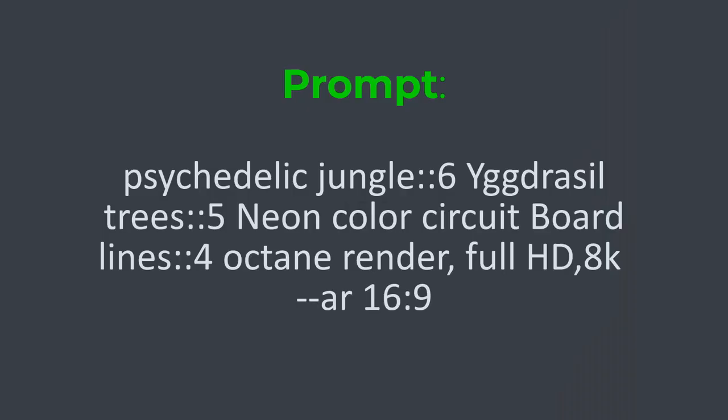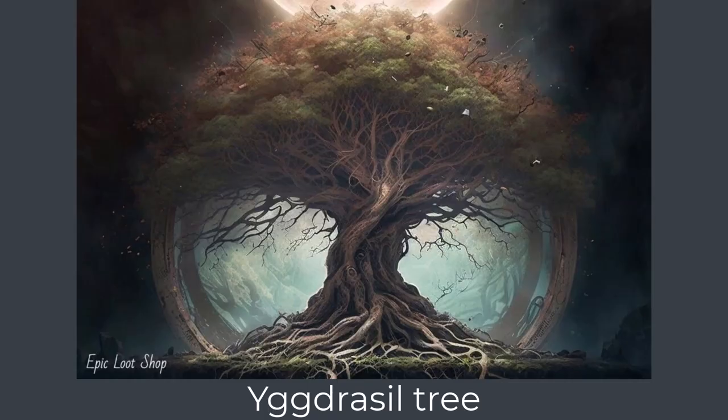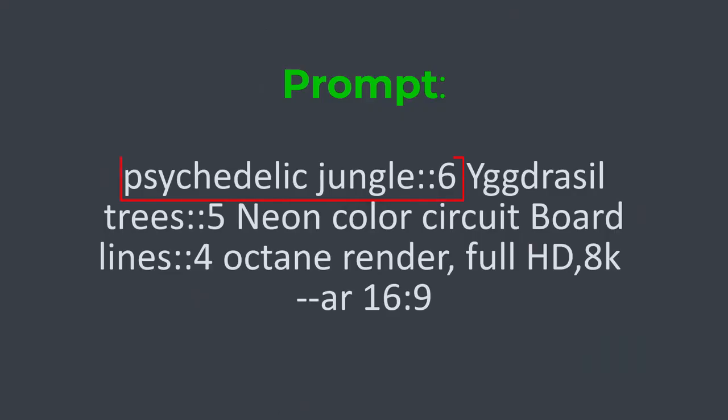I will try to create a psychedelic and magical jungle scene with these two keywords. I would like to use this tree — maybe it is Yggdrasil. If you don't know about the double colon notation, we use it to specify the weight of a keyword. The higher the weight, the higher will be the impact of that keyword. For example, 'psychedelic jungle' has a weight of 6, and 'Yggdrasil trees' have a little less weight.